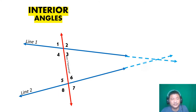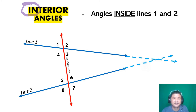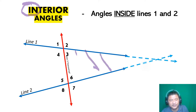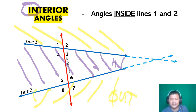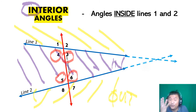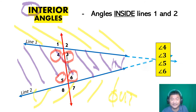Interior angles — from the word interior, meaning inside. These are angles inside lines one and two — that shaded region is the inside. The interior angles are angle four, angle three, angle six, and angle five. There are four interior angles.